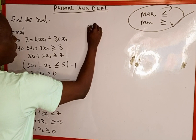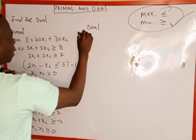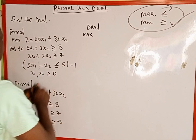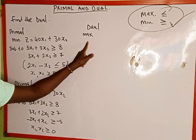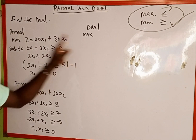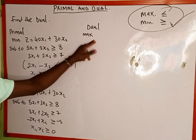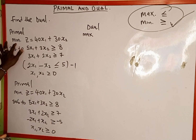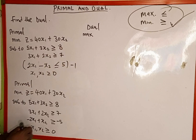So the dual is going to be Max. Remember, if the primal given is in minimization form, the dual is going to be maximization. And if the primal given is maximization, the dual is going to be minimization. Here the primal is minimization, so our dual is going to be maximization.